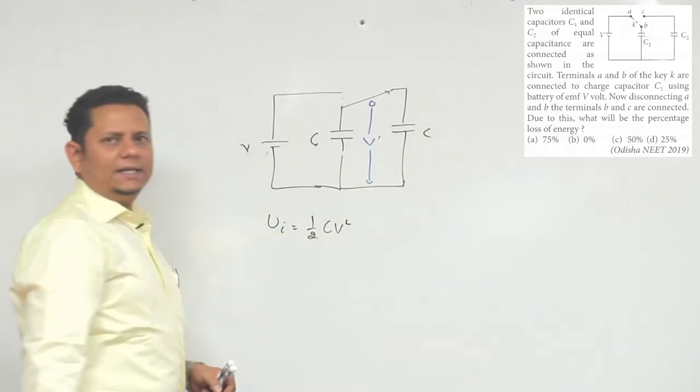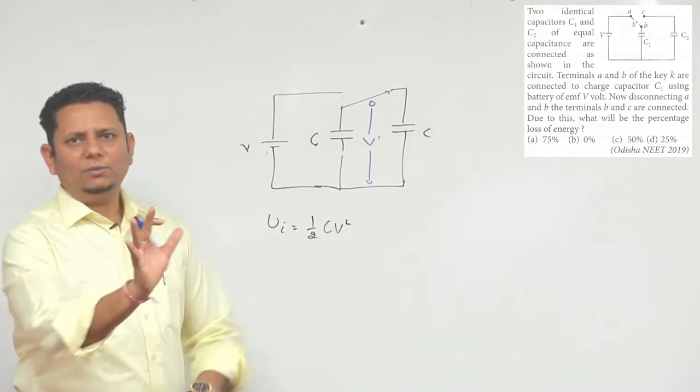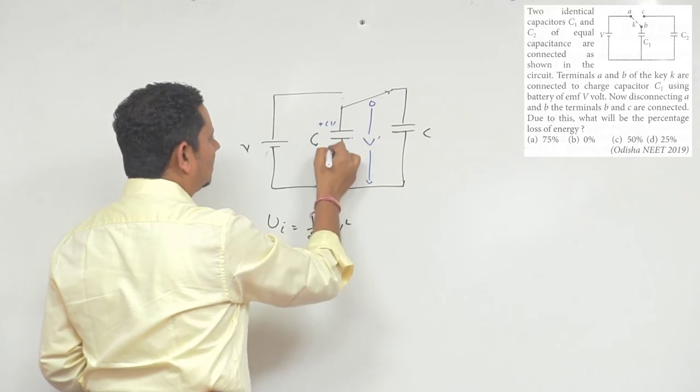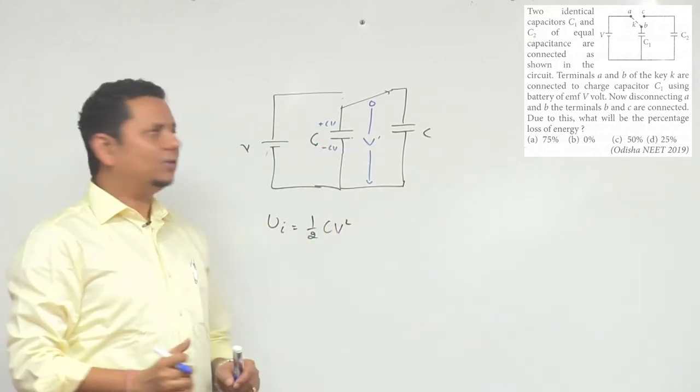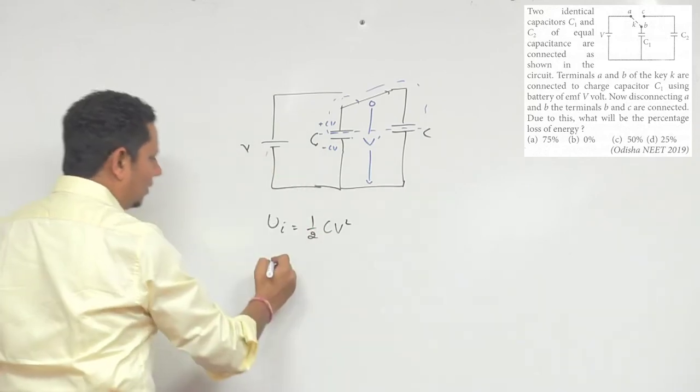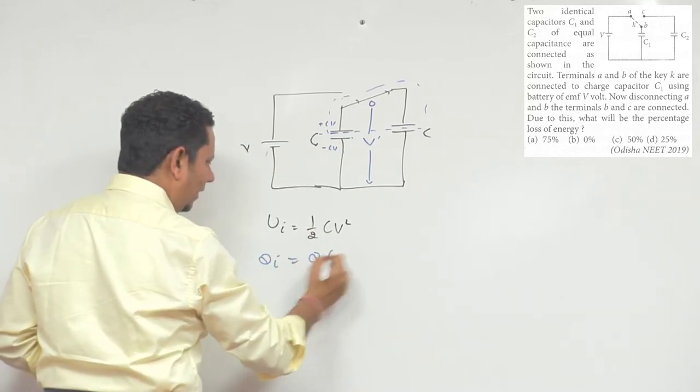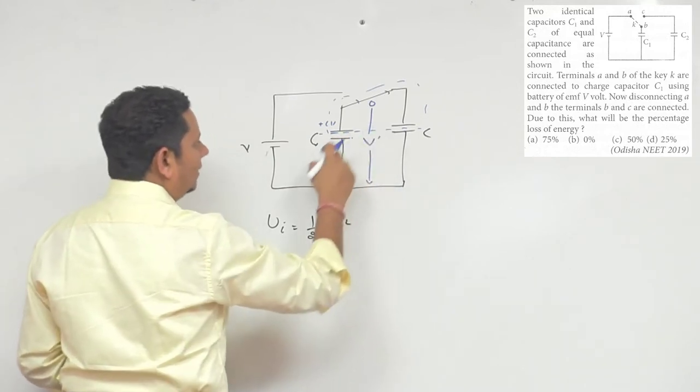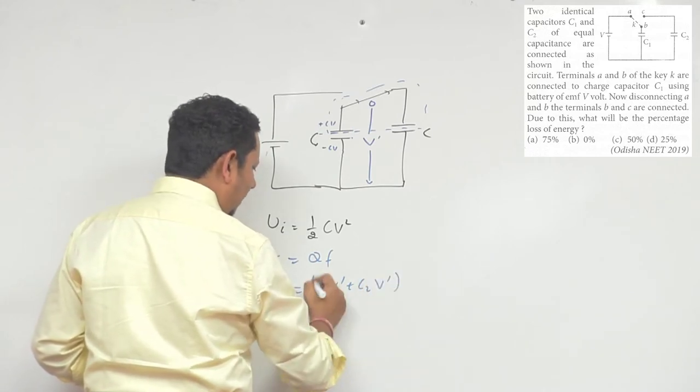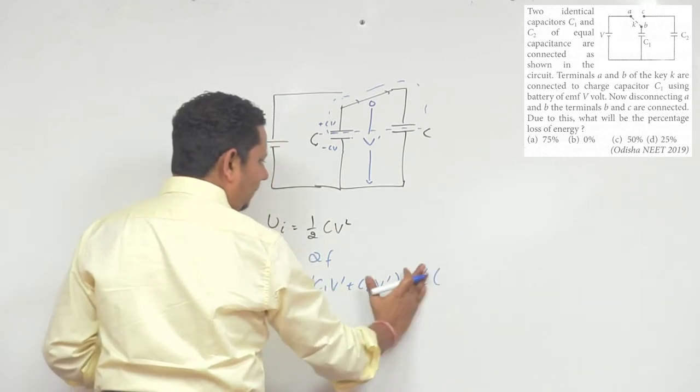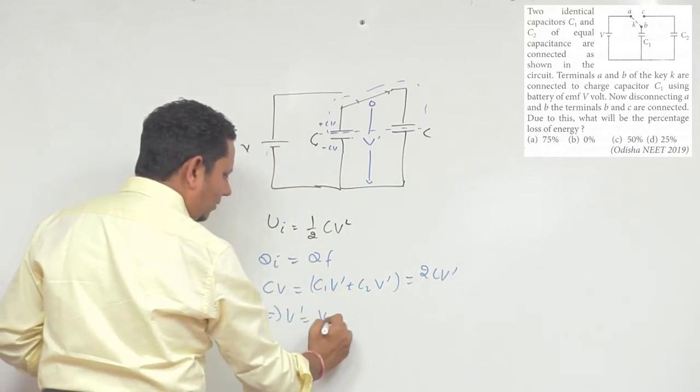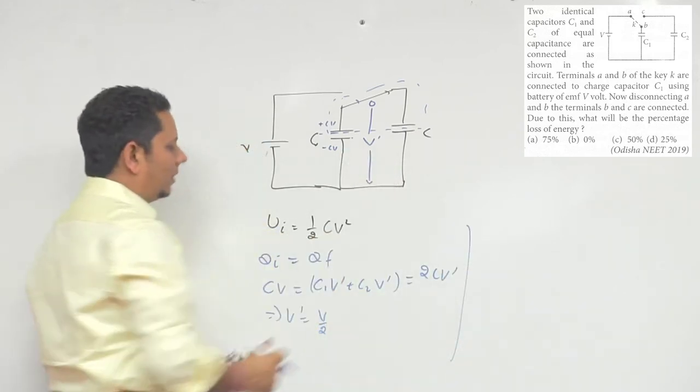Now this is V dash potential. Here, higher potential is plus CV charge, minus CV charge. So here we notice that charge flows. Net charge is same. So initial charge Q initial equals Q final. Initial CV equals final C1 V dash plus C2 V dash. And here C1 equals C2 plus V. So this will be equal to C multiplied by 2CV dash. And this means V dash will be V by 2. That is, on both of these, the potential will be V by 2, V by 2.